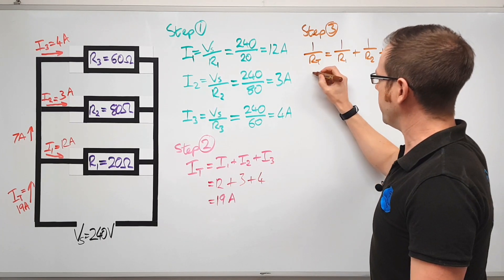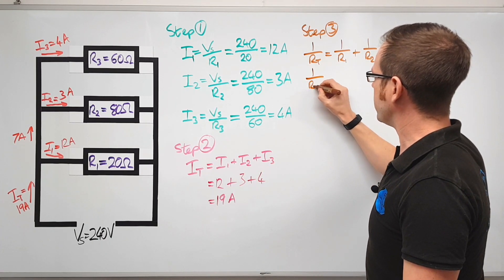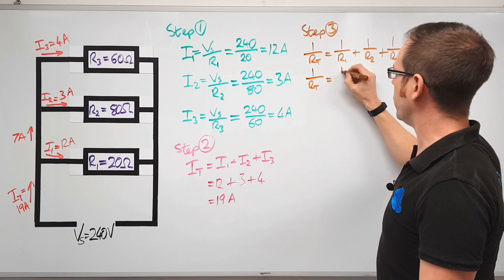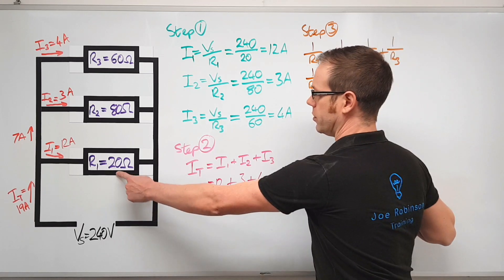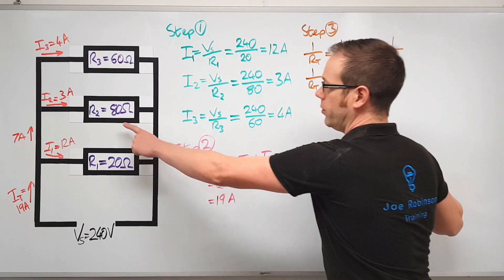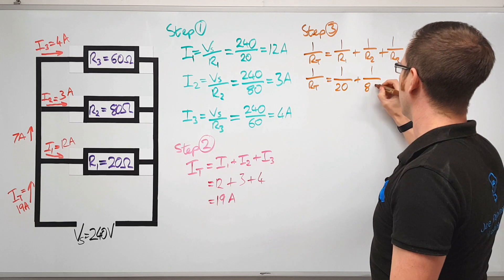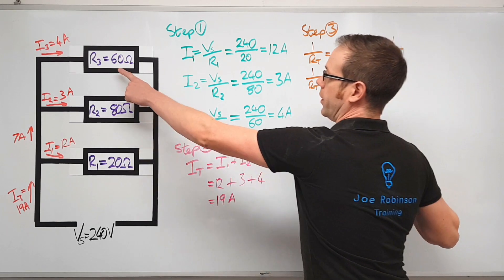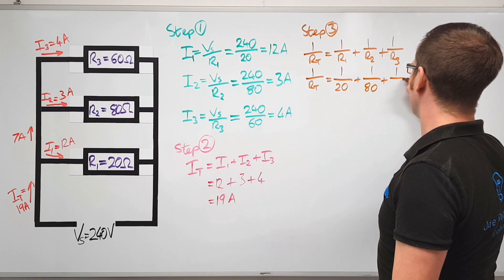So we put the numbers in. We've got our formula, now we put the numbers in. So one over RT is going to be equal to one over R1 which is 20 ohms, so one over 20, and then we've got one over R2 which was 80, and then we've got one over R3 which is 60.